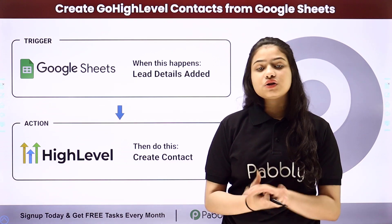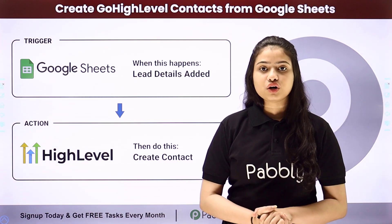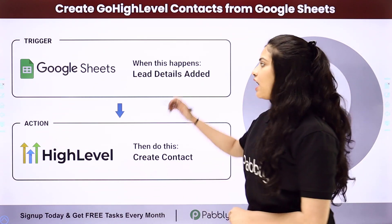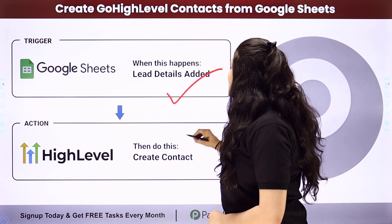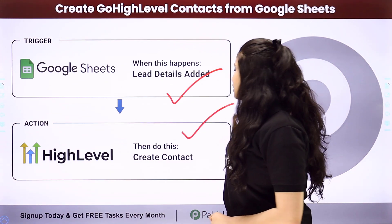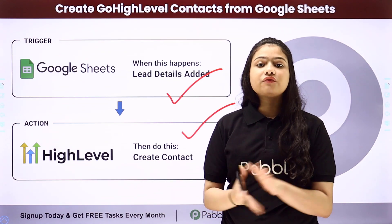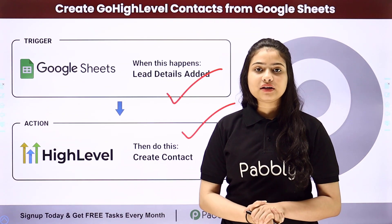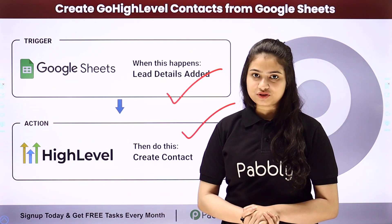Babli Connect works on two principles: trigger and action. We will take Google Sheets in our trigger and Go High Level in our action, and we will connect both of them with the help of Babli Connect in order to automate this entire process.